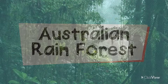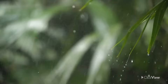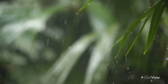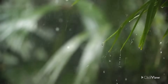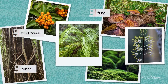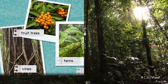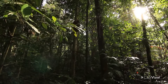A rainforest is an area of land with many tall trees growing close together. It is usually found in tropical areas with plenty of rainfall. Plants in an Australian rainforest include trees such as fruit trees, vines, fungi, ferns, mosses, and orchids. These all enjoy a moist or humid and warm environment.